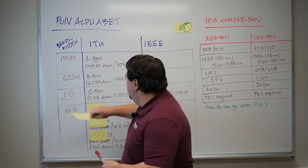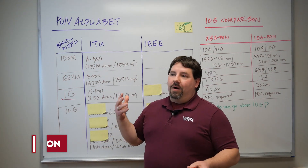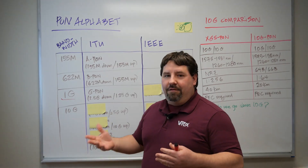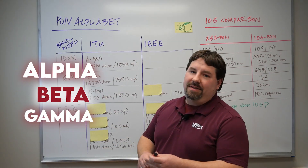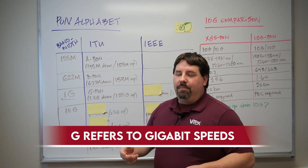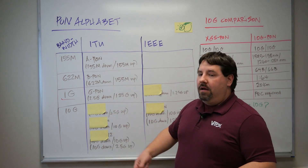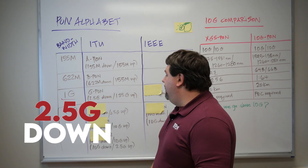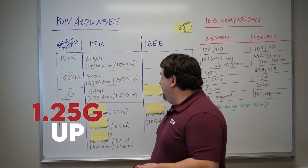Then the ITU standard came out with G-PON. Now, you might be expecting C — A, B, C — but the G actually refers to gigabit speeds, not the Greek alphabet (Alpha, Beta, Gamma). So we're breaking one gig here, and in the standard we're getting as high as 2.5 Gbps down and 1.25 Gbps up.